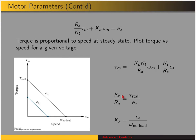The motor torque constant divided by the armature resistance, KT/RA, can be obtained by considering the performance when the motor is not moving — that's the stall torque, at this point on the graph. If omega_M is zero, then KT/RA equals stall torque over EA. Likewise, if we consider the point where no torque is being generated, motor torque is zero and we get that KB equals EA divided by the no-load speed. For different values of EA we'd have different curves — at a higher voltage, one curve; at a lower voltage, another.